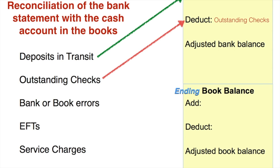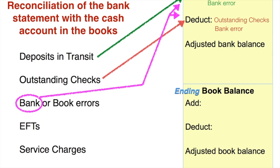We can also have errors — bank errors and book errors. If it's a bank error, you get your bank statement, compare it with your cash account or checkbook register, and find an error on the bank side. Think about who knows about this error: you do, but the bank doesn't know about it yet because you haven't informed them. It could be either an addition or a subtraction from your bank balance because the error could be in your favor or not in your favor.